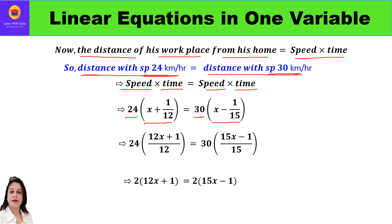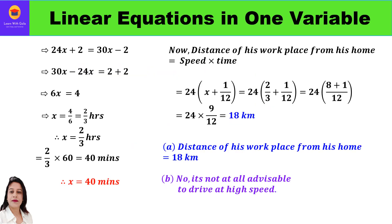This is the linear equation we solve. Taking LCM, we get 24 × (12x + 1)/12 = 30 × (15x − 1)/15. Simplifying, 24 and 12 cancel to give 2, and 30 and 15 cancel to give 2, so 2(12x + 1) = 2(15x − 1). Opening brackets: 24x + 2 = 30x − 2. Rearranging: 30x − 24x = 2 + 2, giving 6x = 4.